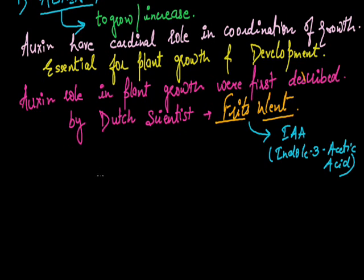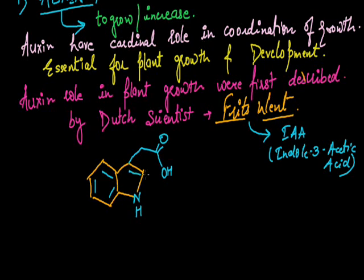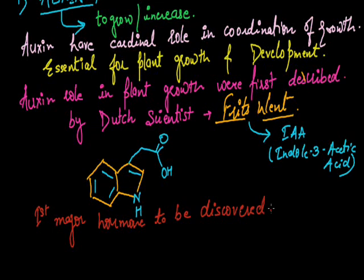This is the phytohormone example of auxin which is naturally produced in the plant. Now we can discuss the diagram of this auxin. This auxin is a heterocyclic compound. This is the structure of IAA, that is indole-3-acetic acid. This is the first major hormone to be discovered by the scientist Fritz Went.